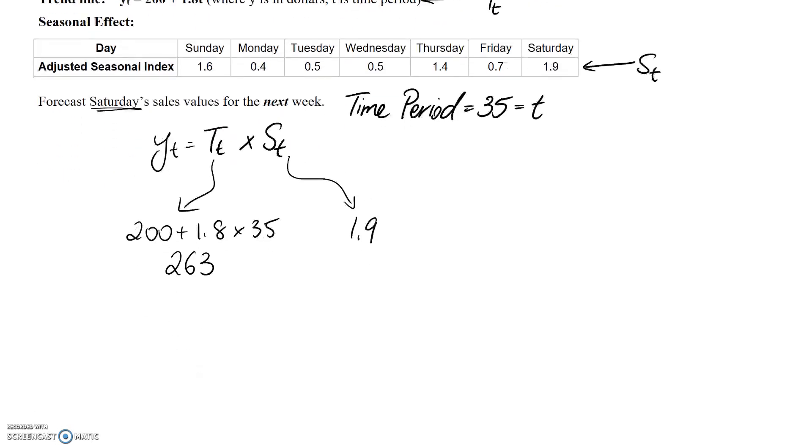All we need to do is plug back in. y(t) is the overall prediction for sales at time period 35.